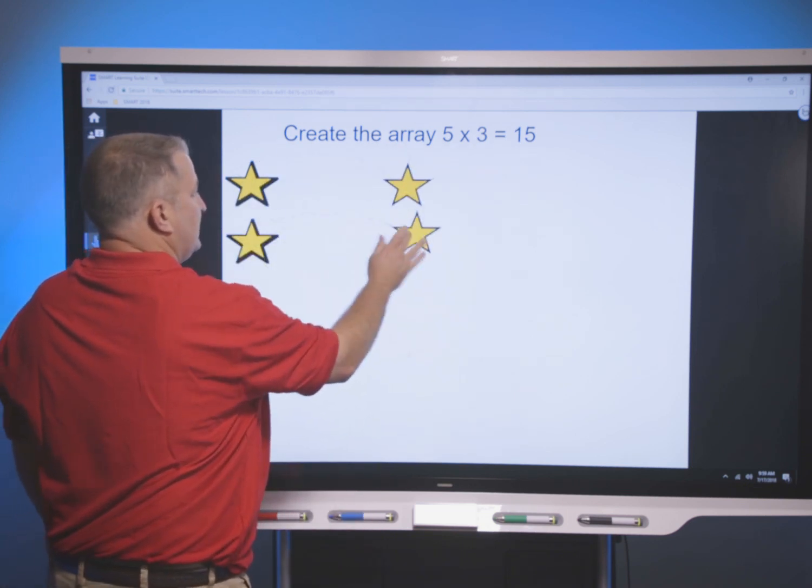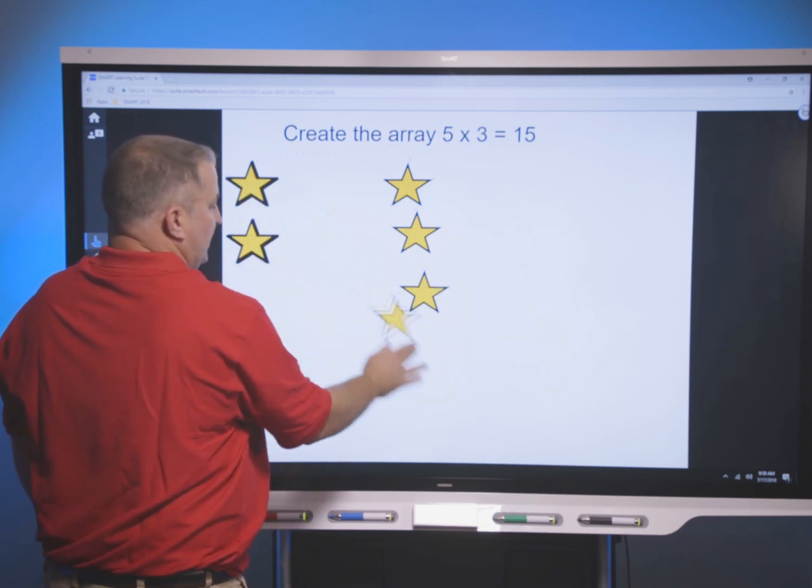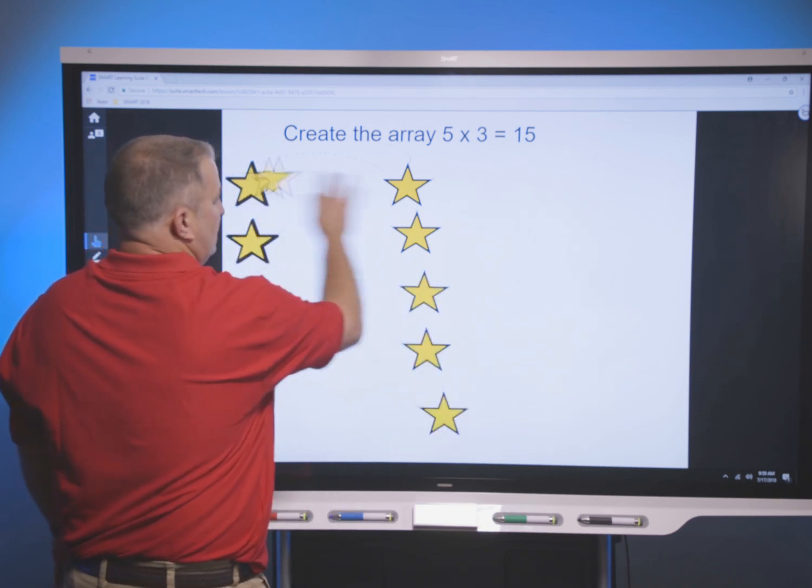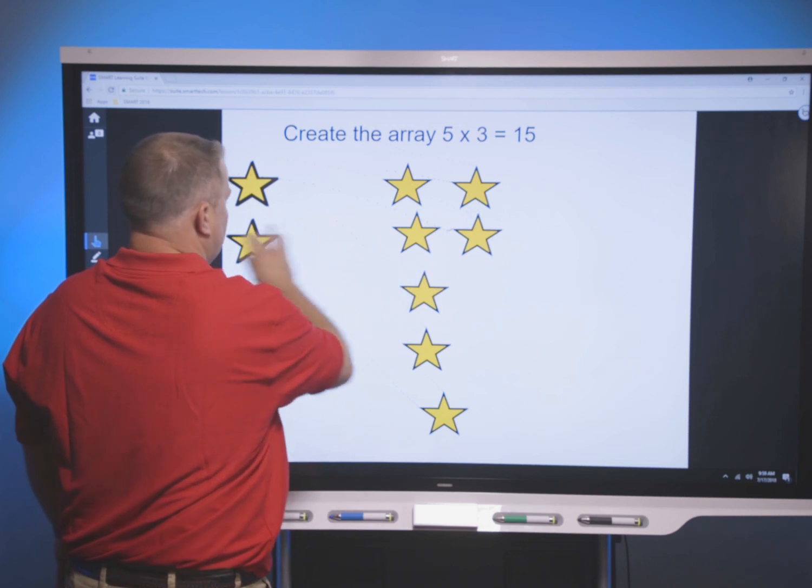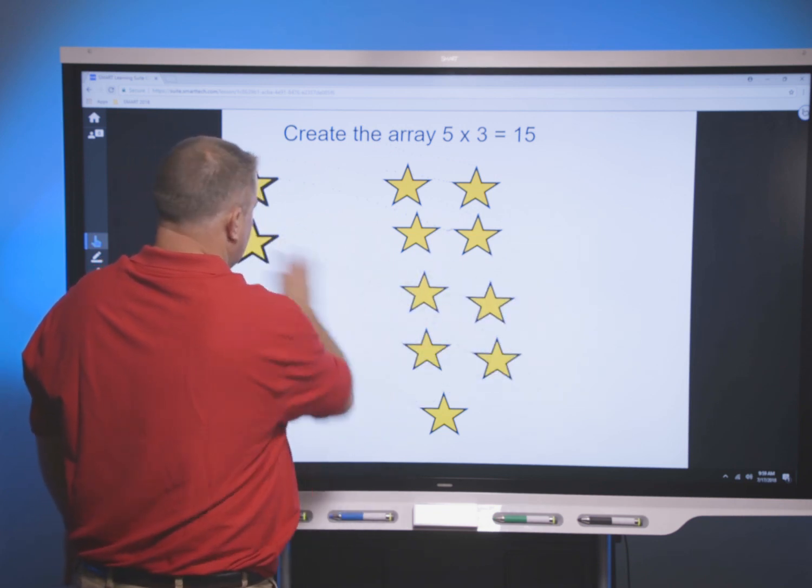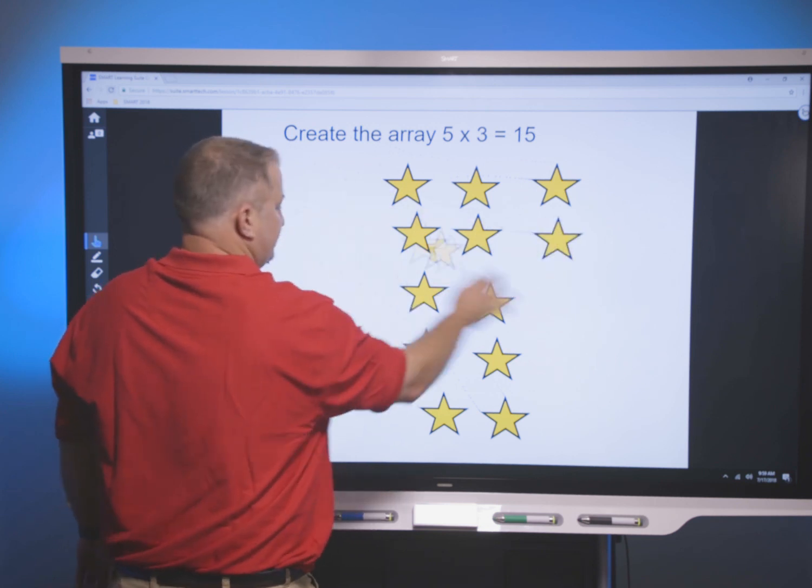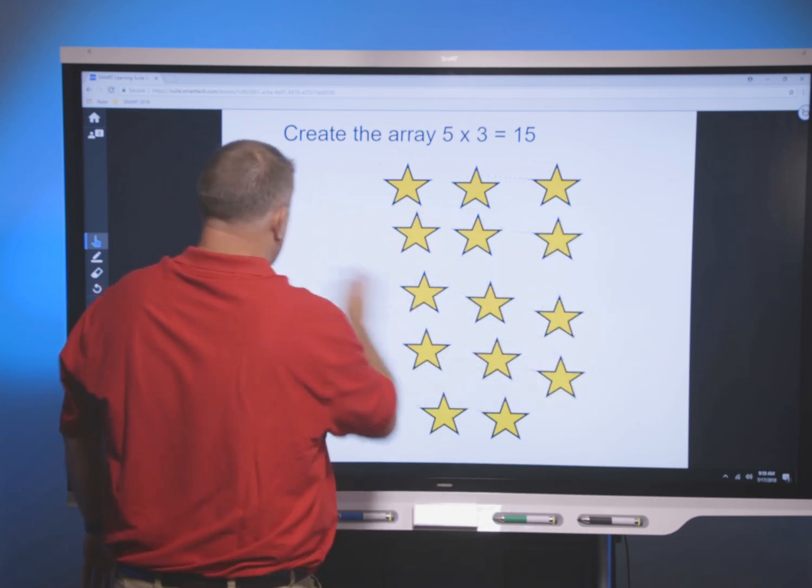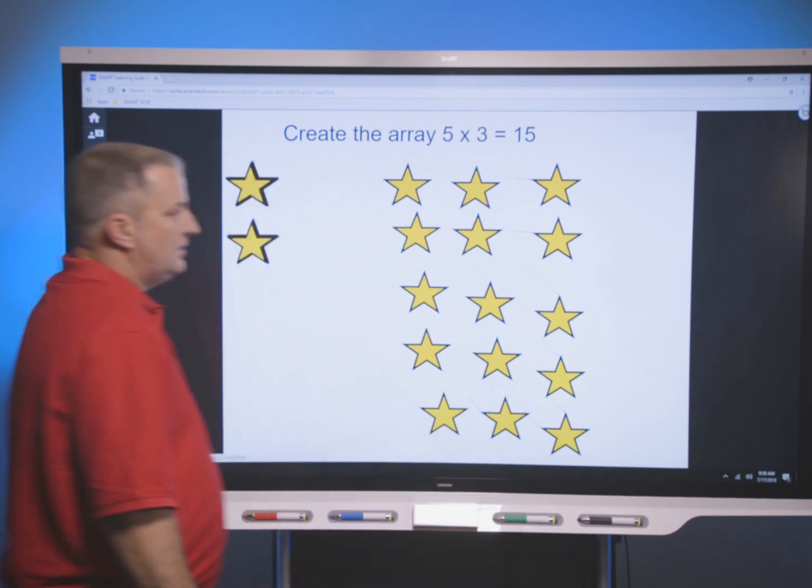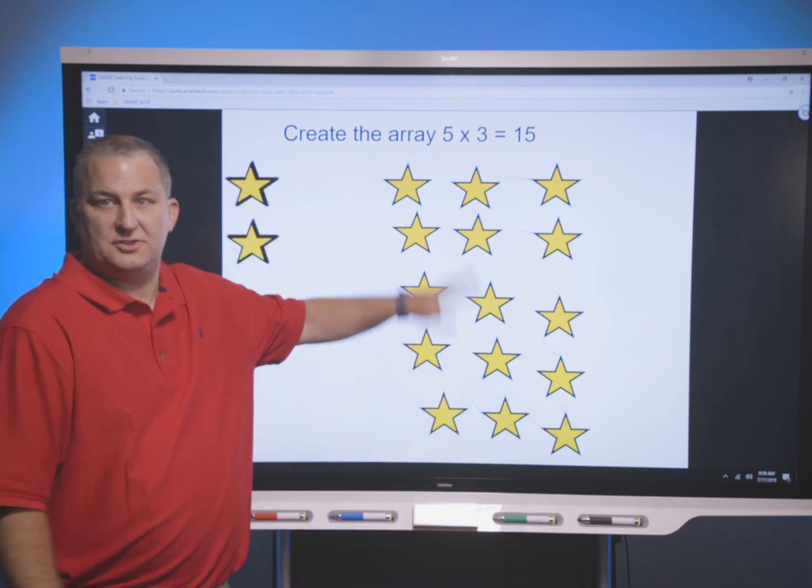So they would have to create a five by three array and they would prove that this equals five times three is 15. Then they're able to go back and count this to confirm.